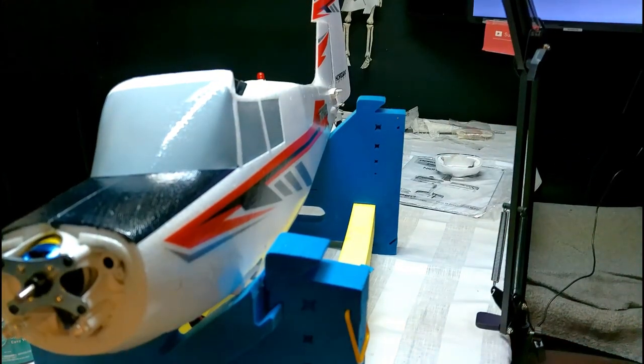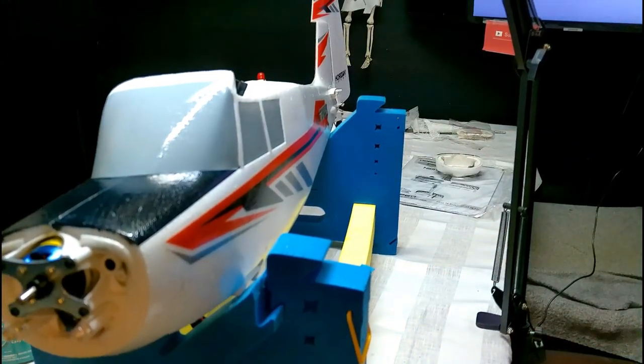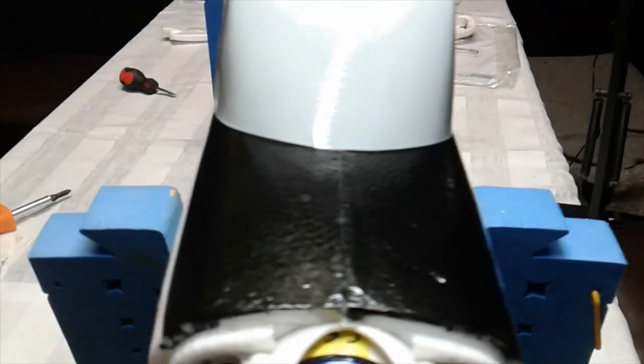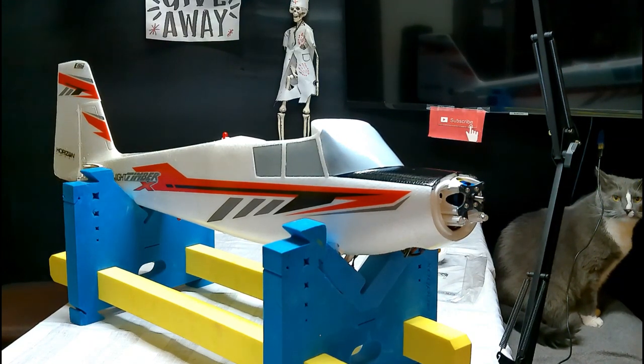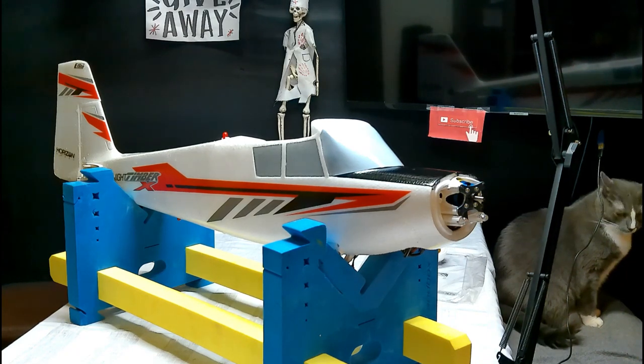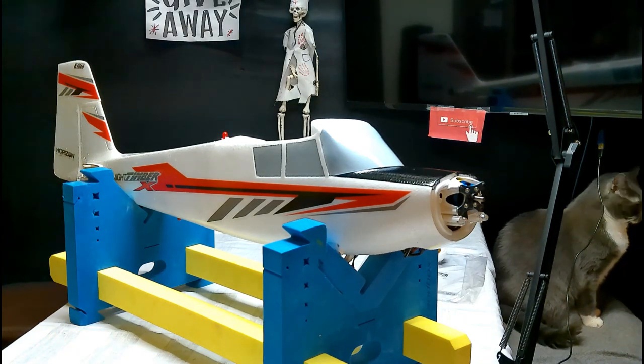Looking good, looking good. Alright so it's dried up here on the black part. Look at that shine. So the milky color goes away when it dries. Got the entire fuselage done and now I'm about to do the wings. So until next time you'll see me here. Thank you guys.